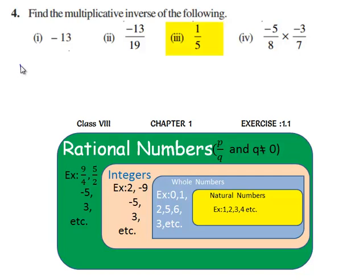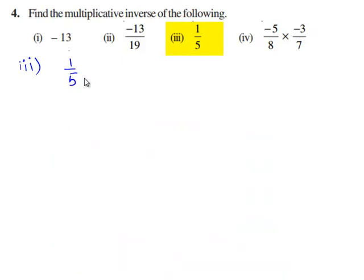Now let us move on to the third bit of the question. Here we need to find the multiplicative inverse of the rational number 1 by 5.